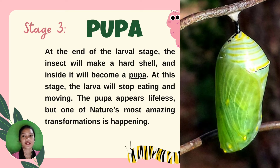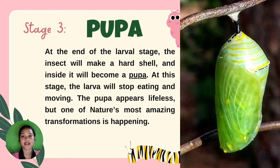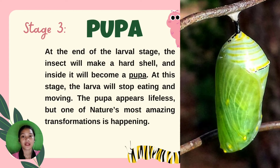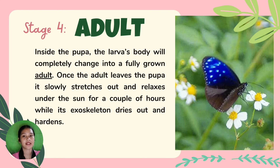The third stage is pupa. Once fully grown, the larva forms a pupa or chrysalis. This is a hardened case to protect it from predators and weather. The pupa stage may last a few weeks to several months depending on the species. Inside, the tissue, limbs, and organs of the caterpillar transform.